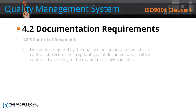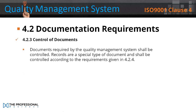4.2.3 Control of Documents. Documents required by the quality management system shall be controlled. Records are a special type of document and shall be controlled according to the requirements given in clause 4.2.4.